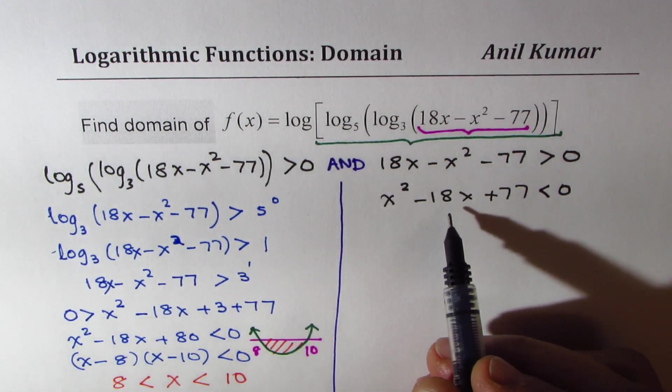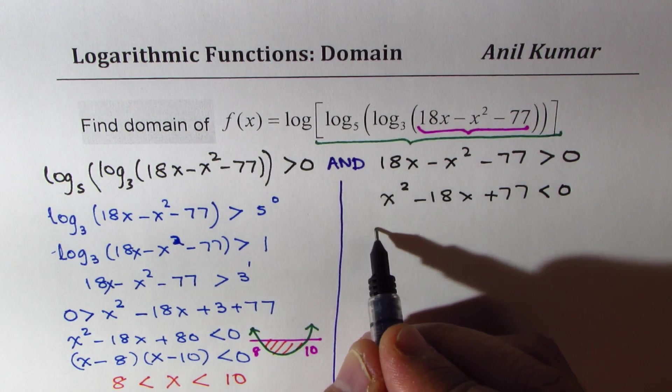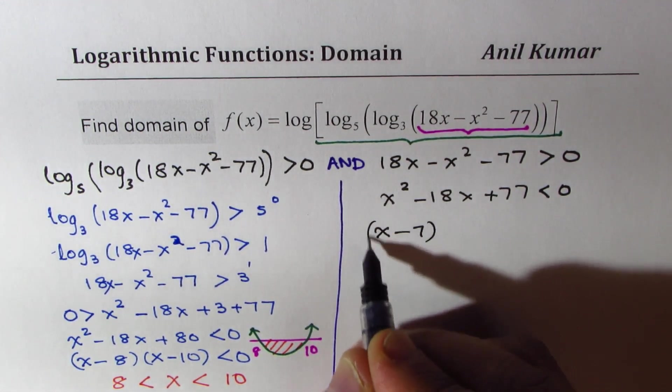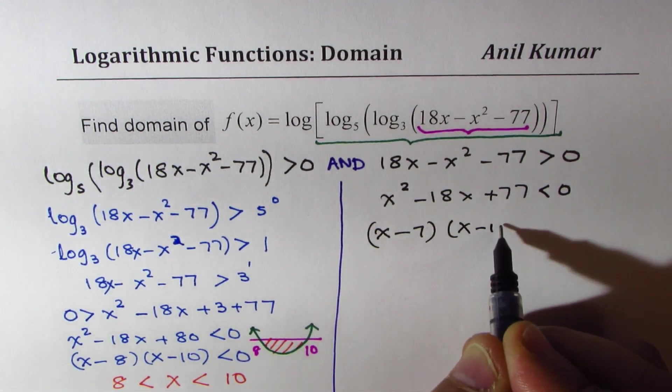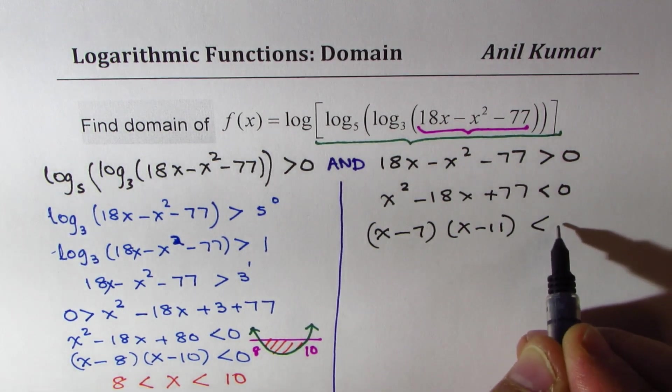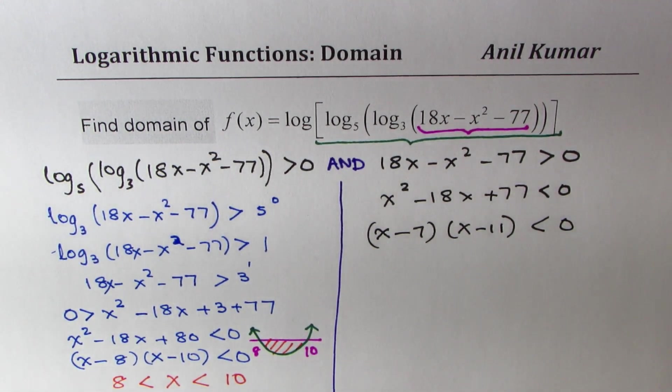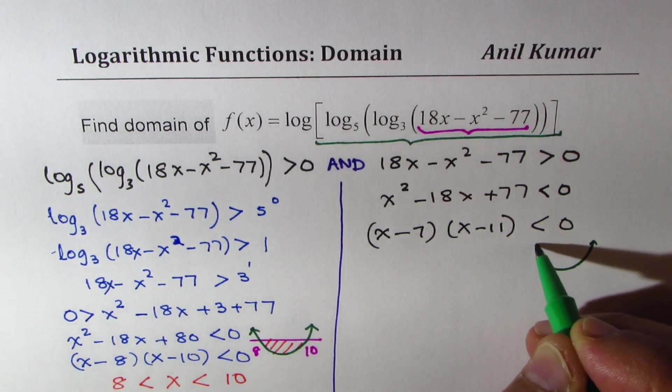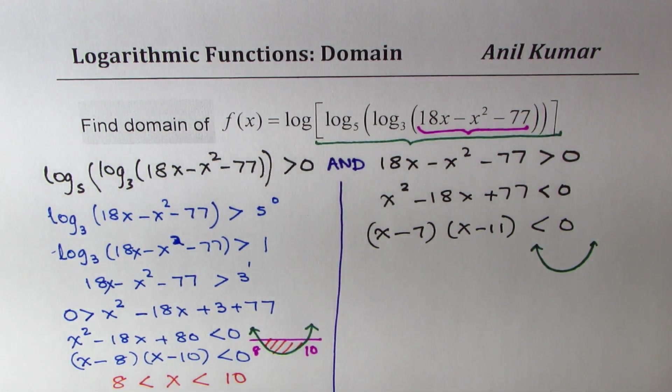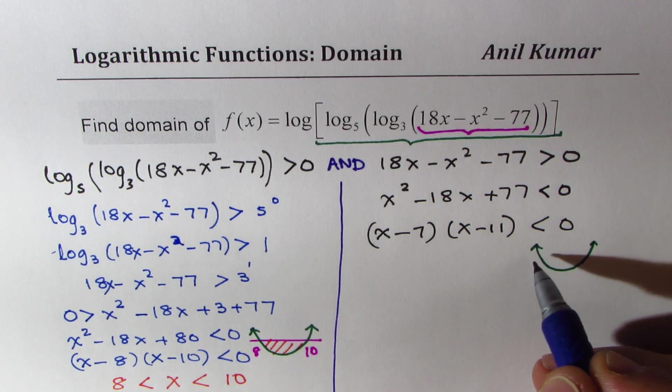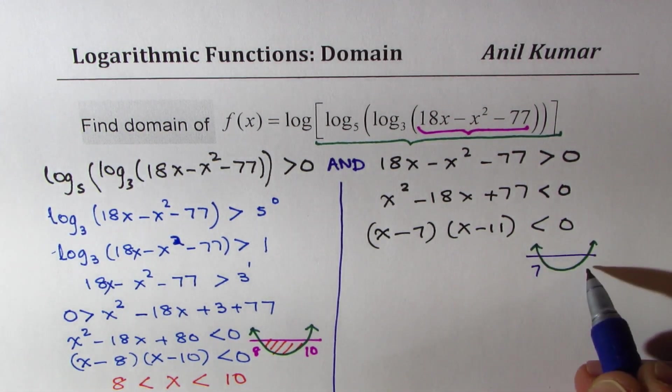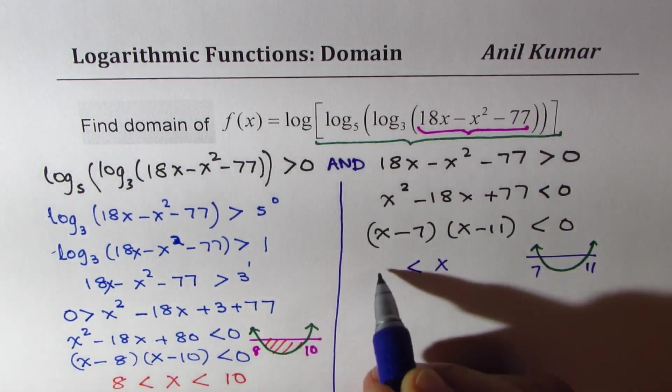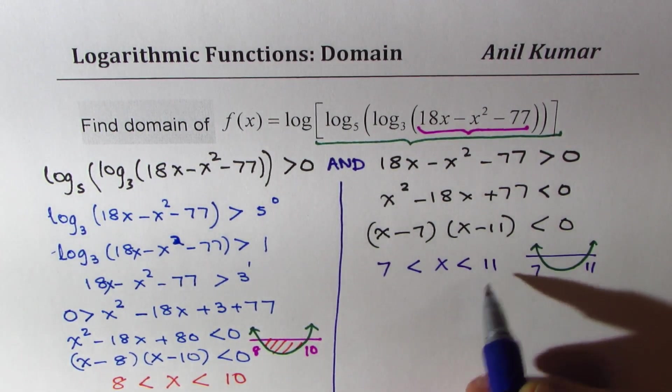77 and 18. 7 times 11 works. So (x - 7)(x - 11) should work. And this is less than 0 when x is between 7 and 11. So that gives you between 7 and 11.